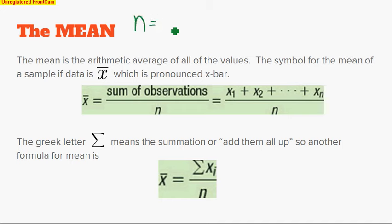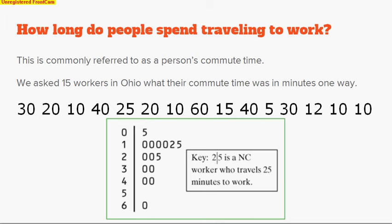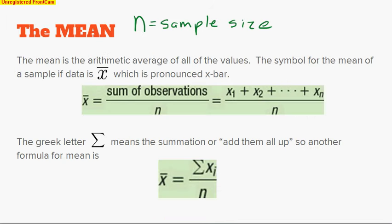Keep that in mind—for the rest of the year, we're going to allow the letter n to represent our sample size. For our example, we had 15 workers, so our sample size would be 15. The Greek letter sigma means the summation or add them all up. Another way that we could write the formula for the mean or x-bar is using this Greek letter that says add up all the individual values and then divide by n.